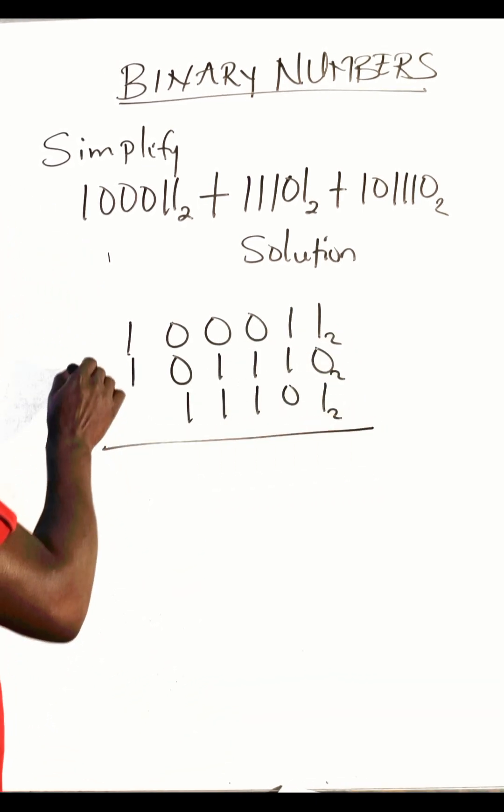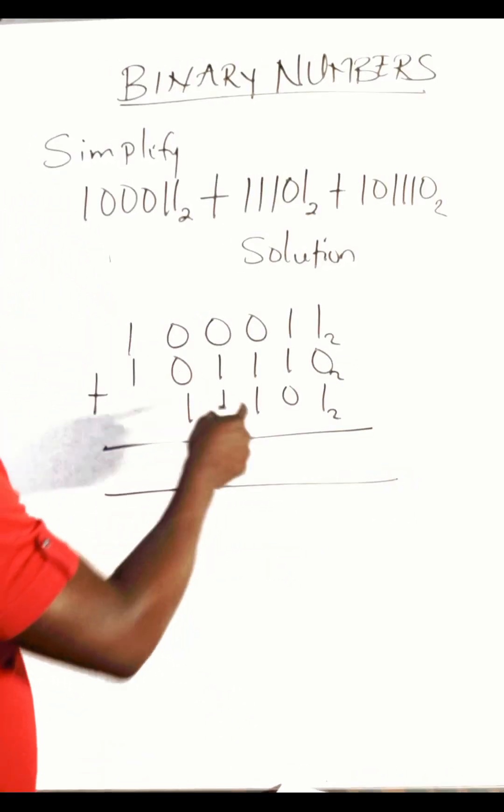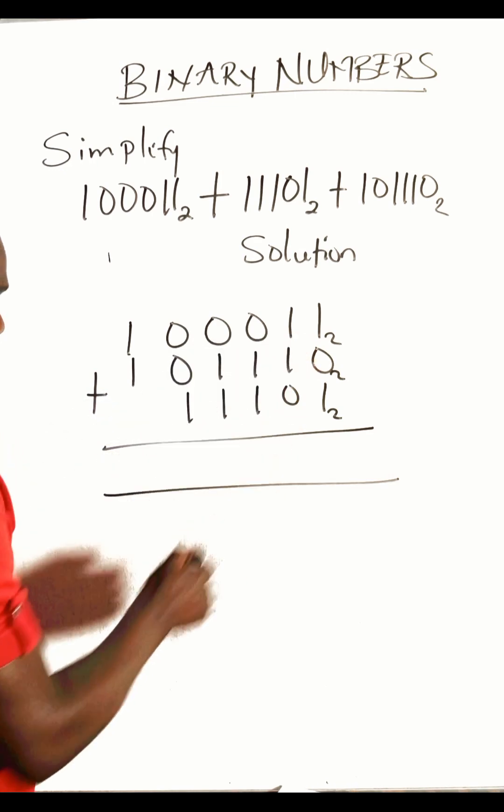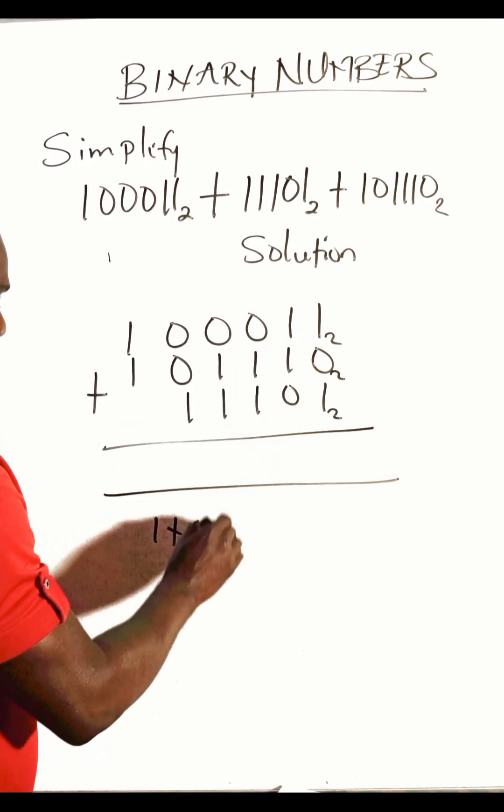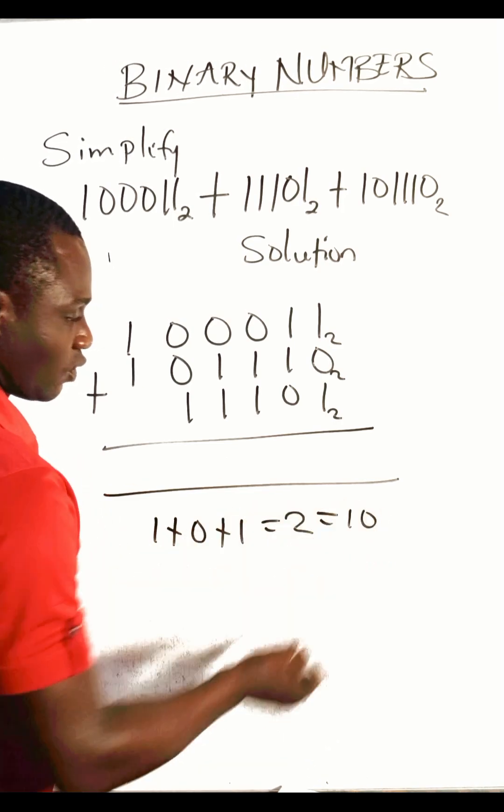So let's add this. I'll be showing the solution here. We add from this end. One plus zero plus one gives us two, and in binary two represents ten, so we write down zero, carry one here.